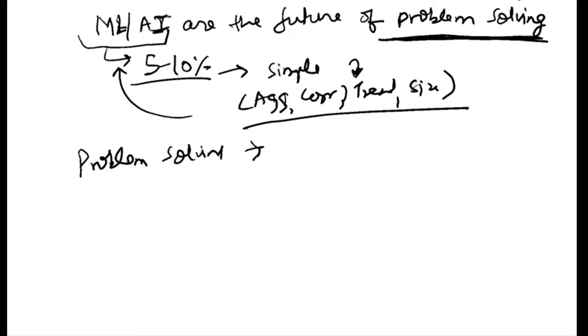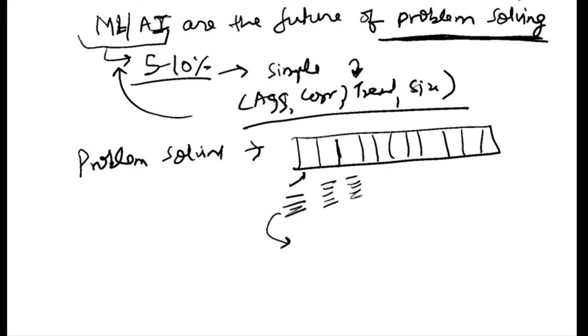Effective problem solving is when you take a big problem and break it into smaller pieces. You identify clearly what the problem is, list down and figure out what those possible causes are, and then figure out a solution or set of solutions.